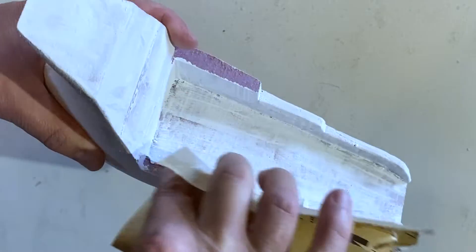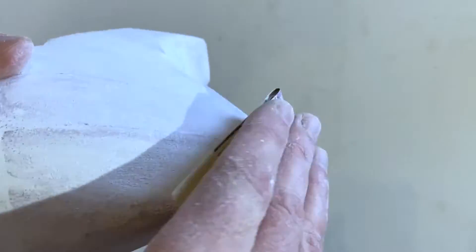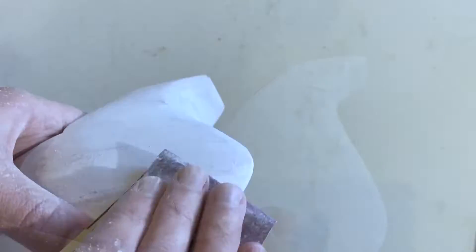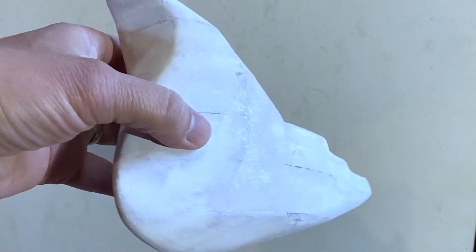Now I'm just going back over, sanding and reapplying, until it's a thick enough layer that I feel like the foam will be protected. I'm just going to make it nice and smooth.